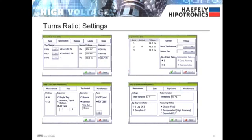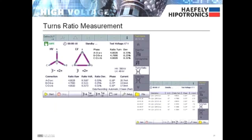During the turns ratio mode, the user enters information on the tap changer, nominal voltages, which taps will be tested, ratio deviation threshold, and much more. When the turns ratio measurement is complete, all data is displayed: turns ratio, its deviation from nominal, as well as voltage ratio, phase displacement, and excitation current.